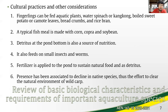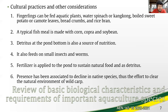For cultural practices surrounding common carp aquaculture, we start with the fingerling stage. Fingerlings can be fed aquatic plants such as kangkong, boiled camote leaves, breadcrumbs, and rice bran. In a typical fish meal, corn, copra, and soybean are added to make aquatic feeds. As a bottom feeder, the common carp feeds on detritus and small insects and worms. A fertilizer is applied to the pond to sustain natural food and also as detritus, which the common carp likes since it is a filter feeder.